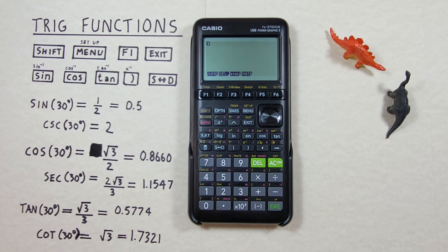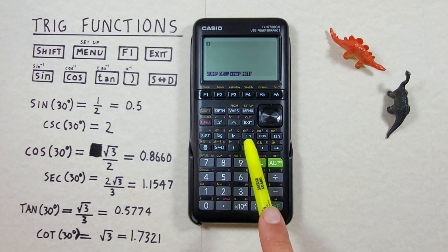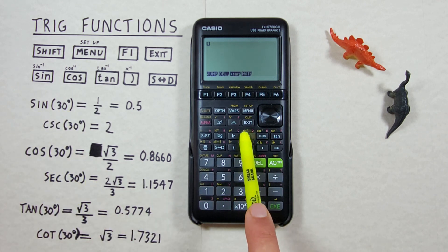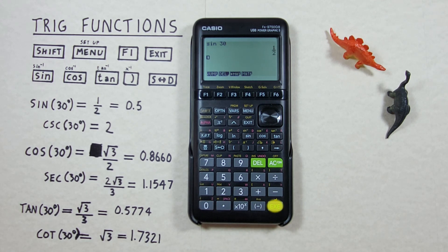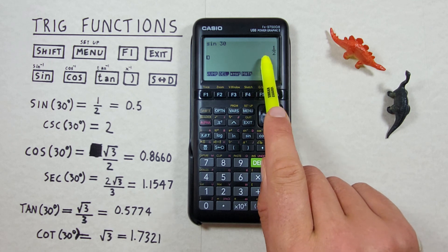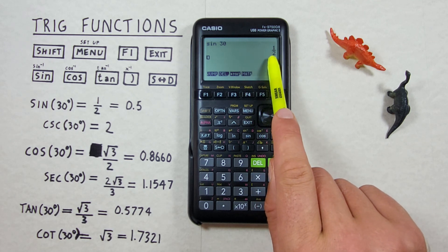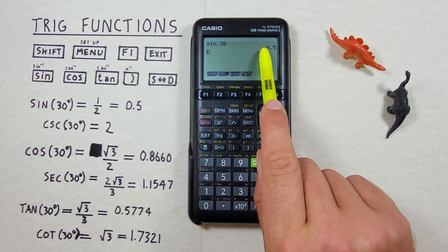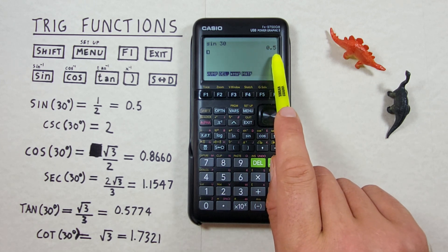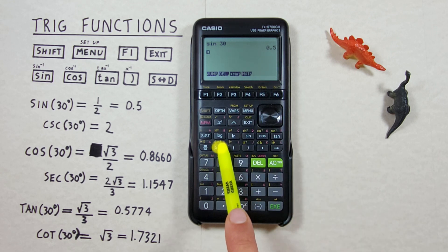Starting off with the basics, if we just want to find sine, cos or tan of a number we use these keys. For example, if we want to find sine of 30 degrees we press sine, 30, and then hit EXE. We see we get a result as a fraction of 1 over 2, and if we want that in decimals we can hit the STD key and convert that to 0.5. We can convert back and forth by hitting this key again.